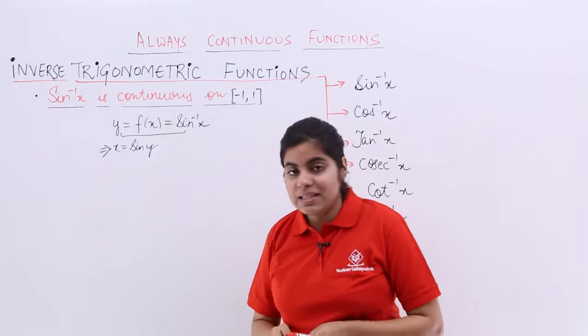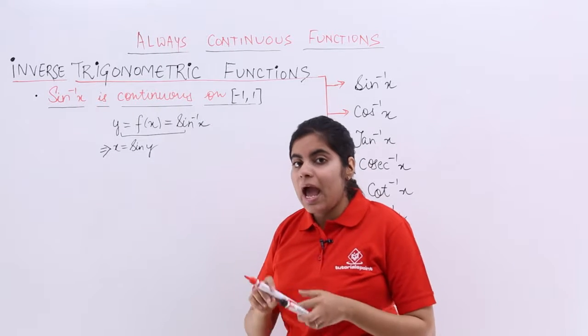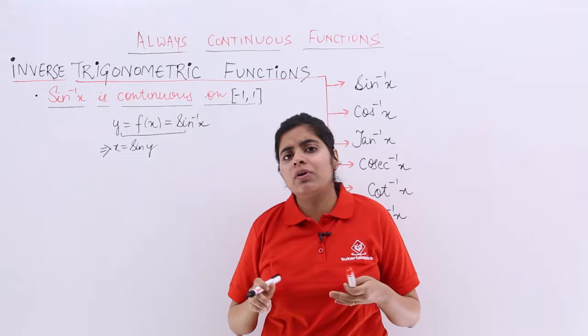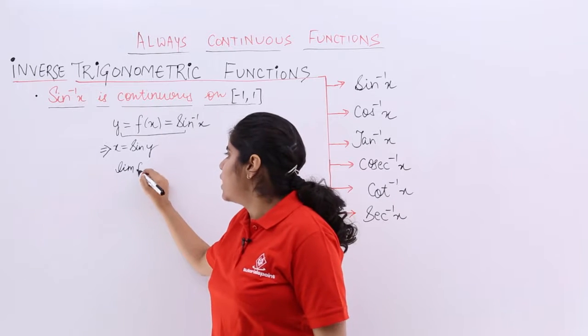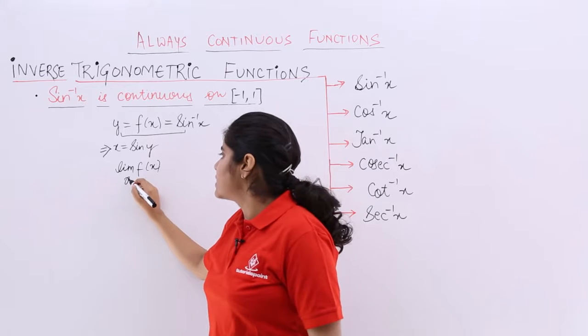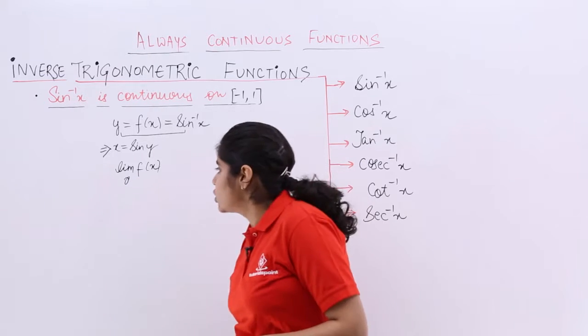Now, if x is equal to sine y and I know that I need to prove for continuity, I basically, what need to show? I need to show the limit f(x) at x tends to a. Let me write it more clearly, limit f(x) at x tends to a is what?